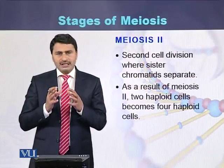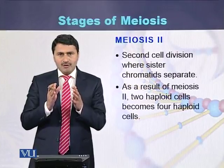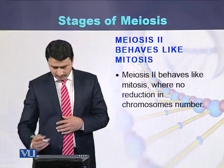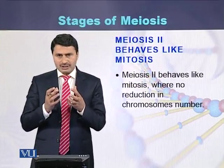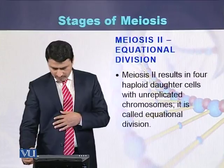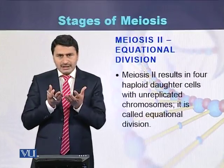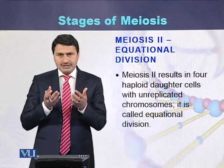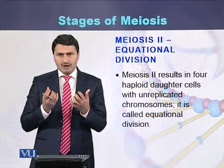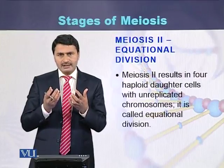Meiosis II is a division where the sister chromatids separate from each other, and meiosis II works or behaves like mitosis. There is no reduction in the number of chromosomes. Meiosis II can also be called equational division, where the chromosome number is maintained. As a result, from two mother cells, four daughter cells are produced, each containing the same number of chromosomes.